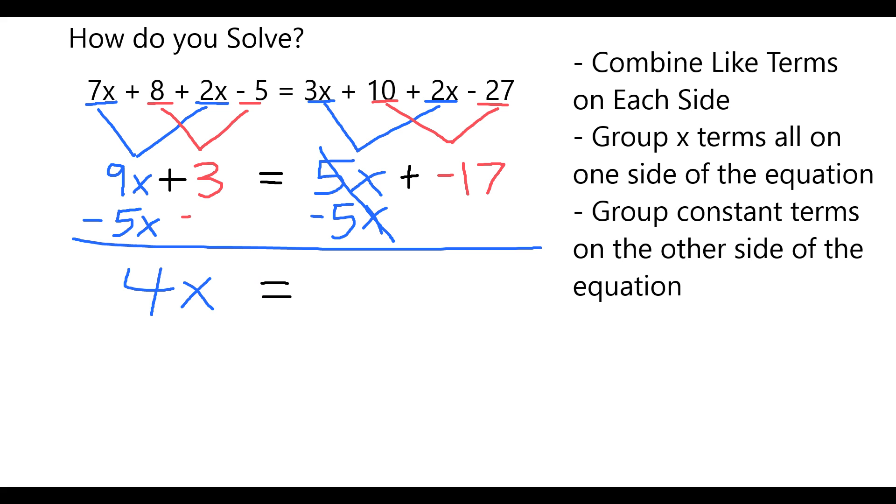Now I can group my constant terms, my non-variable terms, on the other side of the equation by subtracting 3 from both sides. I want to get rid of it on the left. 3 minus 3 cancels out, and on the other side, I have negative 17 minus 3, which leaves me with negative 20.